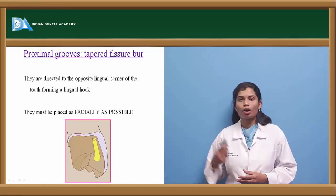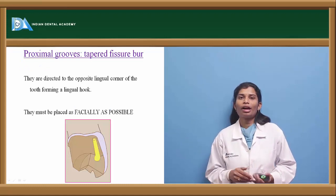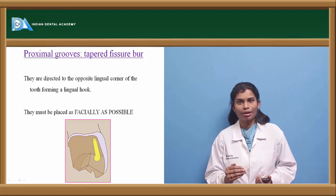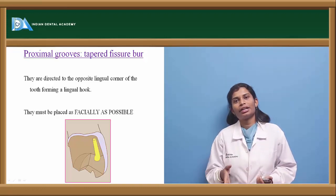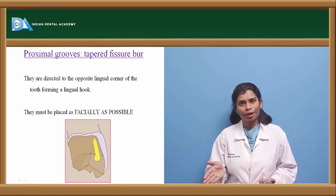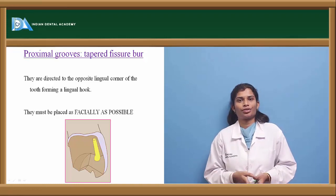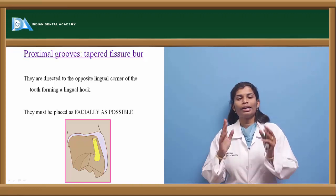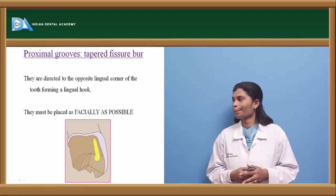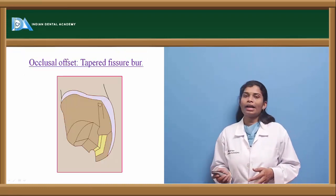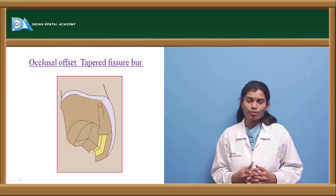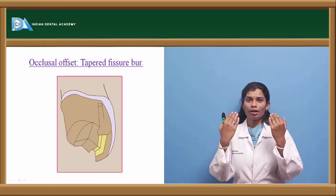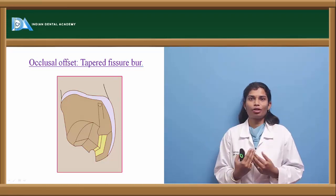The seating groove should be placed 0.5 mm away from the chamfer finish line developed with the torpedo diamond and extend 0.5 to 1 mm into the tooth structure, leading to a proper groove that guides correct placement. It should be placed as facially as possible, with its inclination parallel to the facial angle of the tooth.